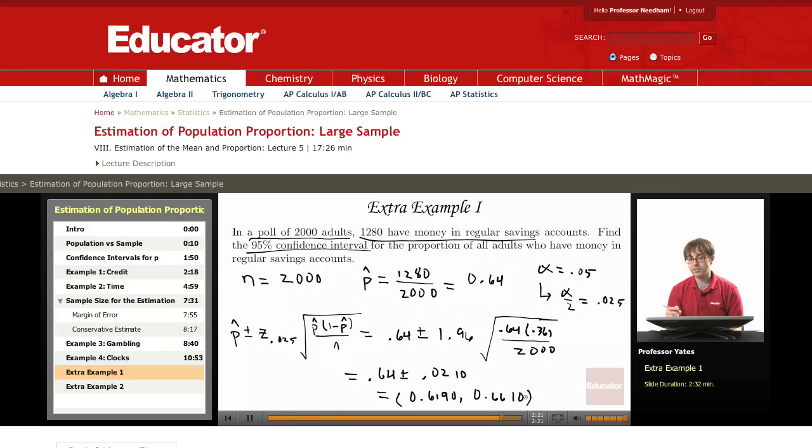So to interpret my confidence interval, I would say with 95% confidence, the proportion of all adults who have money in regular savings accounts is between 0.619 and 0.661.